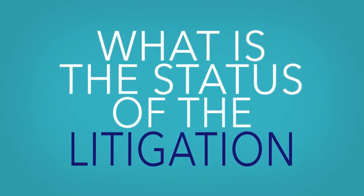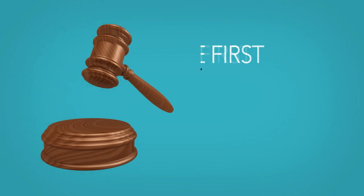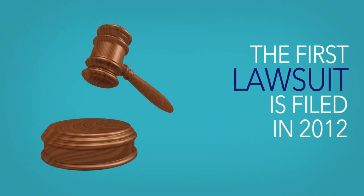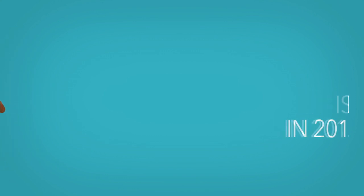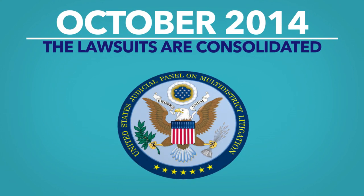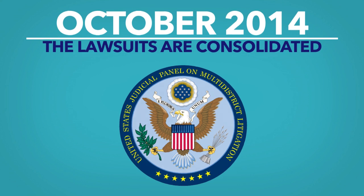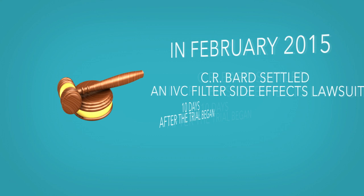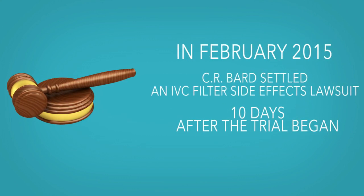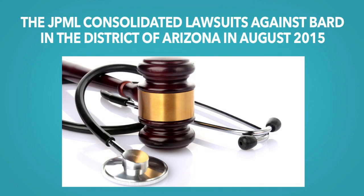What is the status of the litigation? The first lawsuits were filed against Bard in California and Pennsylvania state courts in 2012. In October 2014, the U.S. Judicial Panel on Multi-District Litigation (JPML) consolidated lawsuits against Cook from 11 districts to an MDL in the Southern District of Indiana. In February 2015, CR Bard settled an IVC filter side effects lawsuit ten days after the trial began. The JPML consolidated lawsuits against Bard in the District of Arizona in August 2015.